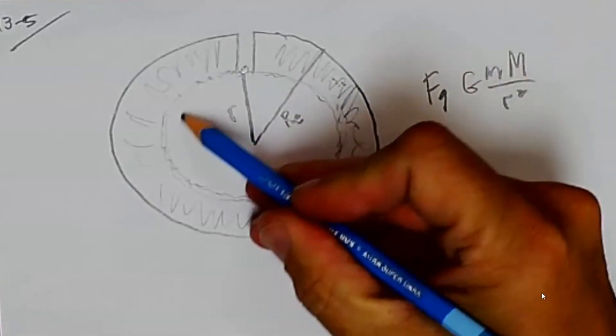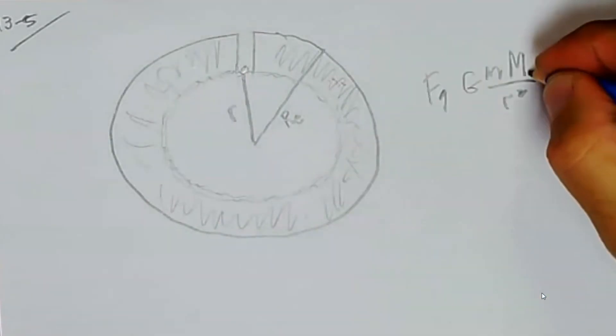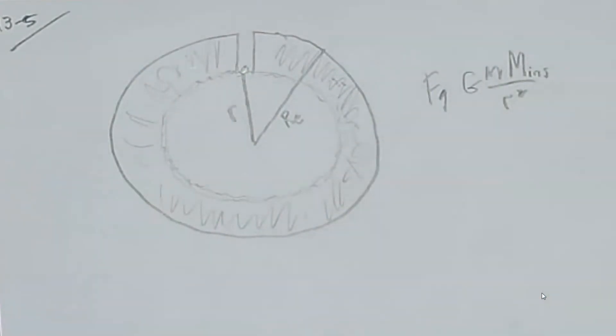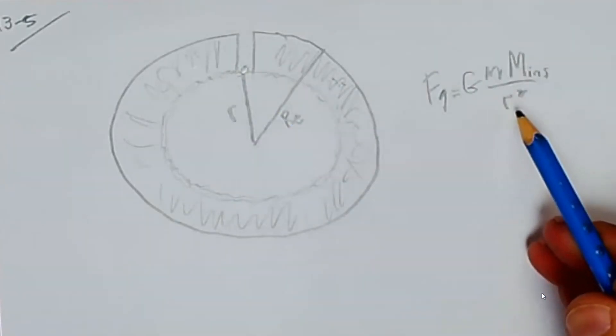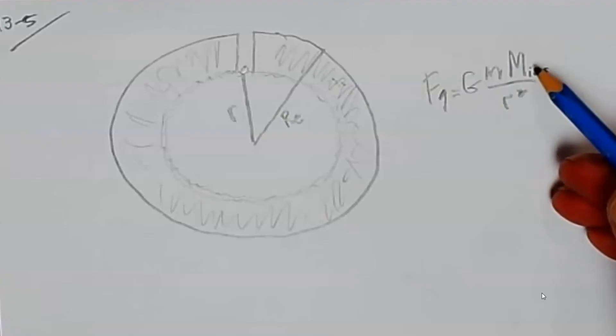So let's call this mass of this inside part, I'll label it INS for inside. And so I know the force of gravity acting on me at this spot would be determined by this equation. But how do I figure out what that mass is? It's not like I can put it on a scale and weigh it.